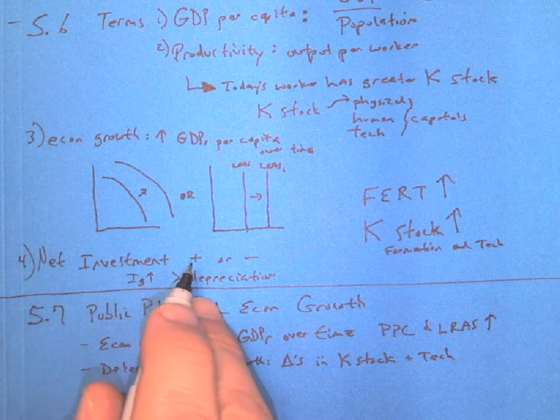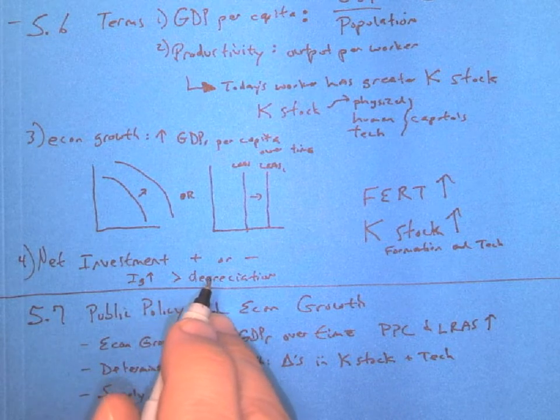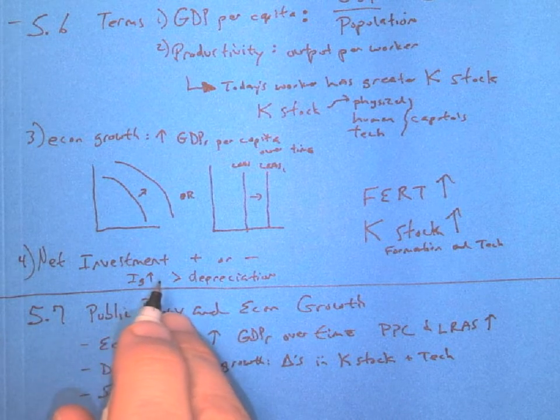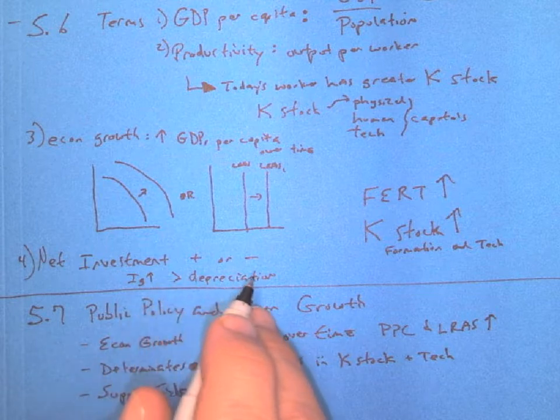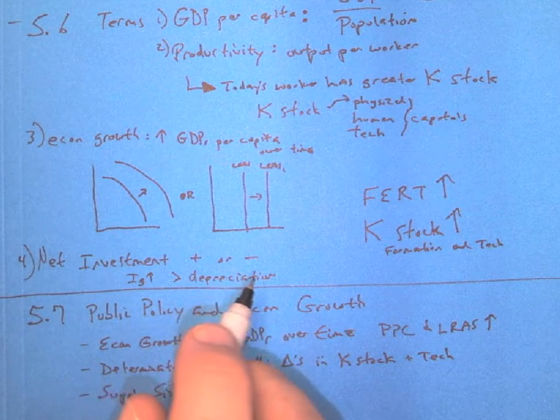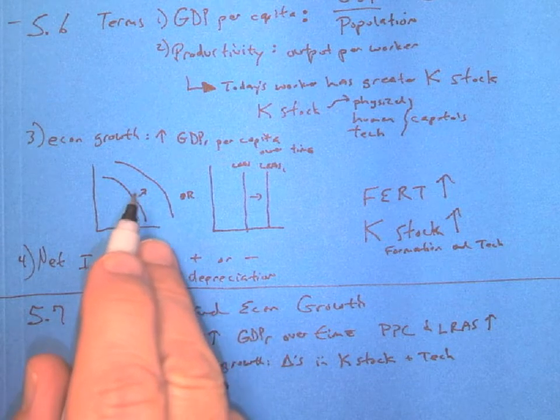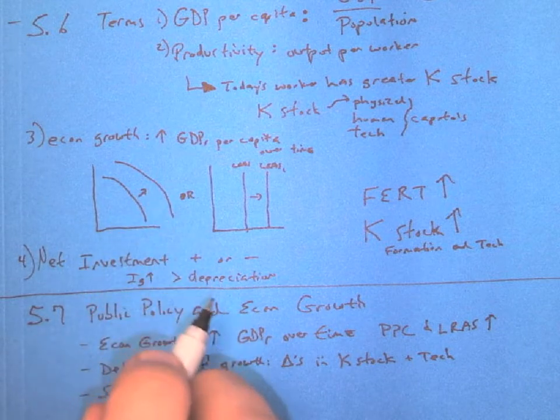Then we'd have a positive net investment. If depreciation exceeds our investment into our physical capital or our capital stock, then we would have negative net investment. And then this would actually shrink inward. We want this to expand outward so we can have economic growth.